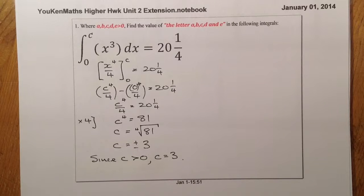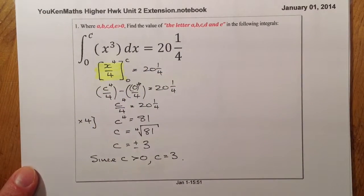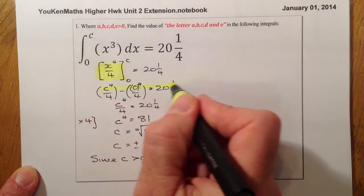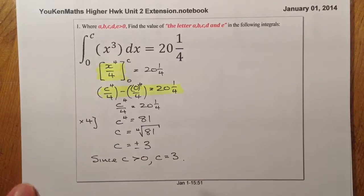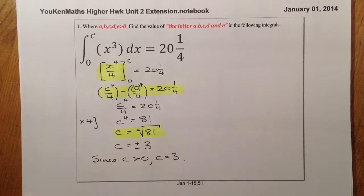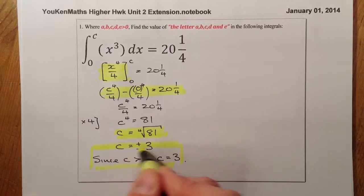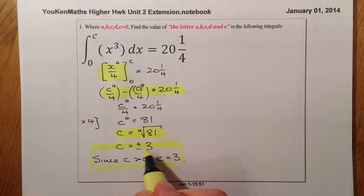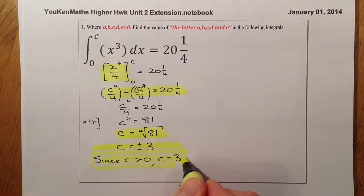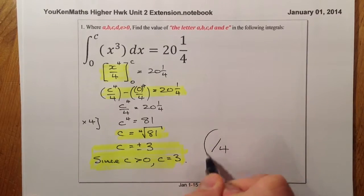Marks for this one — 4 marks again. The first mark for integrating, the next mark for substituting in the values, the third mark for getting the fourth root of 81, and the final mark for getting C equals plus or minus 3 and then making the decision on where the solution lies. So that question is out of 4.